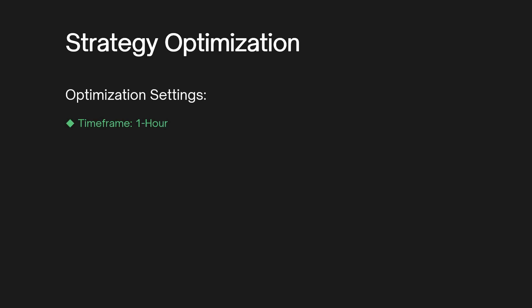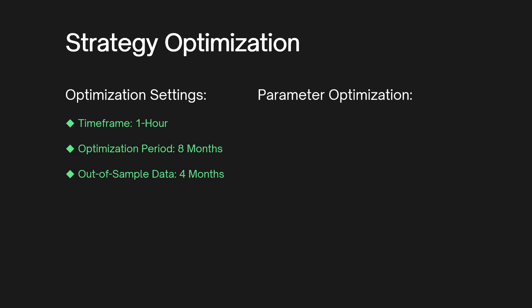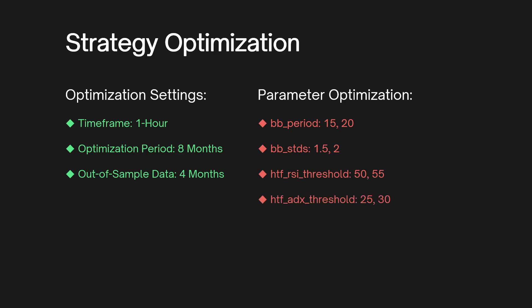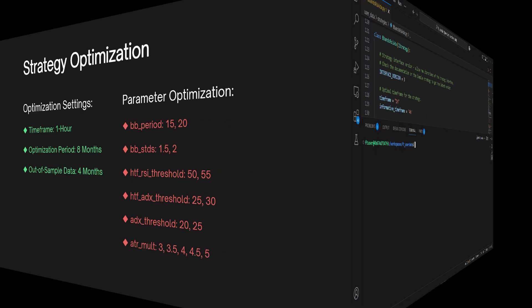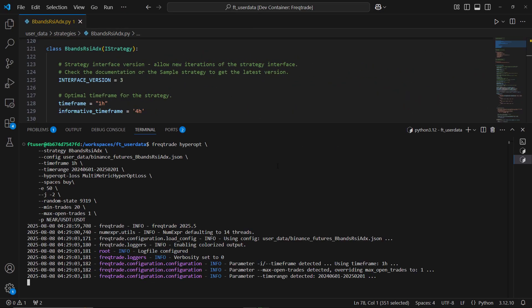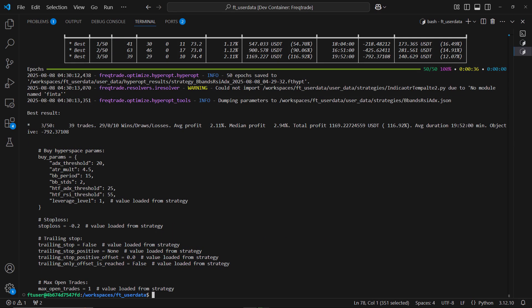Now that we understand the strategy, let's move on to optimization using FreqTrade. We'll test on the 1-hour timeframe and split the data into in-sample (8 months) for tuning the strategy, and out-of-sample (4 months) for testing on unseen data. Key parameters to optimize include BB period and BB STDs, which control the length and width of the Bollinger Bands; HTF RSI threshold, which defines the RSI level used to filter trade direction; HTF ADX threshold and ADX threshold, which ensure sufficient trend strength on both timeframes; and ATR multiplier, which determines how far the stop loss is placed from the signal candle. We'll use FreqTrade's HyperOpt feature to find the best combination of these parameters, then run a full backtest to see how the strategy performs.